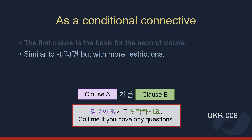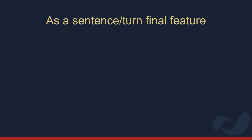거든 was originally a causal conjunctive and over time became a sentence final form, which has a different purpose and is more common in spoken language. Sentence final 거든 is normally described as a grammatical form used to give reasons for something. However, there's more to say about it than that.